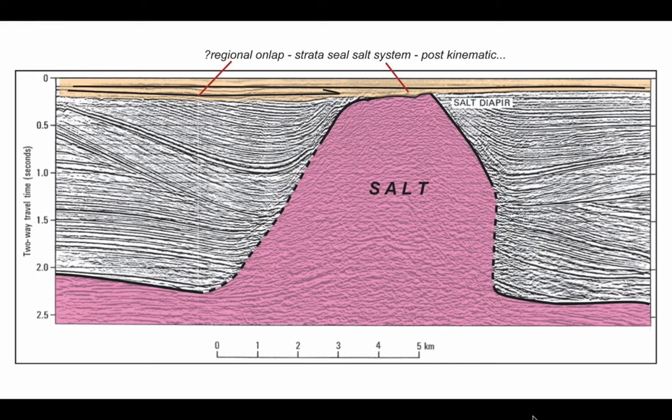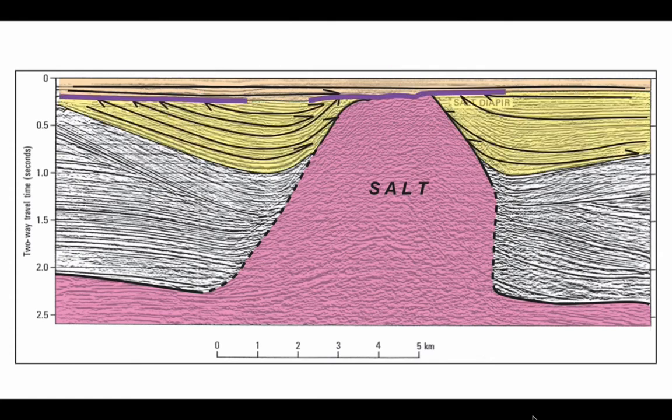We've got regional onlap and the strata themselves seal the salt system. They're post-kinematic and they lie on unconformity against underlying strata. I've picked the unconformity out with the purple smudges where we've got truncation of the underlying reflectors.